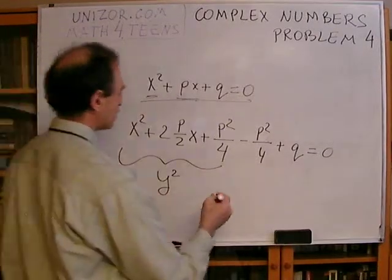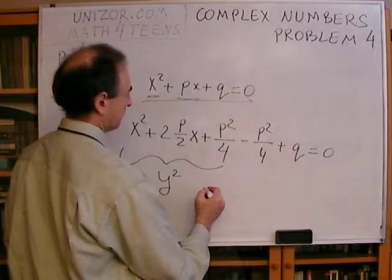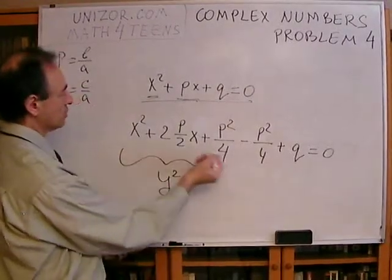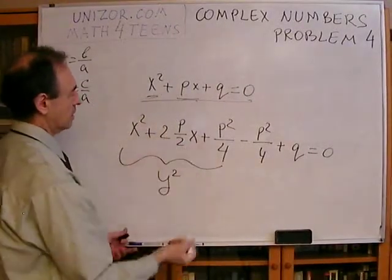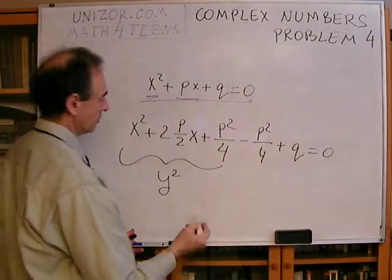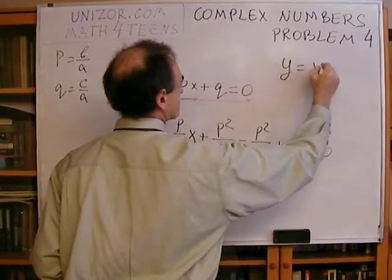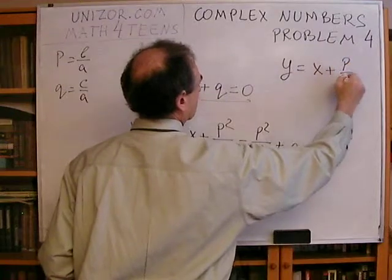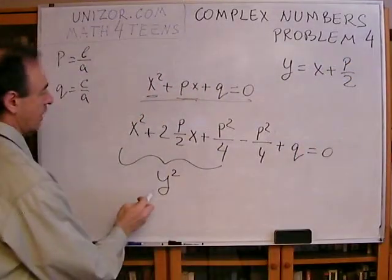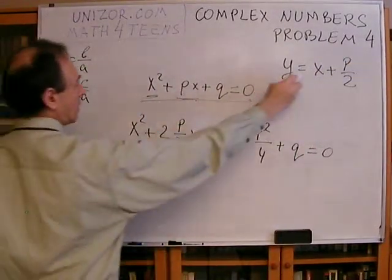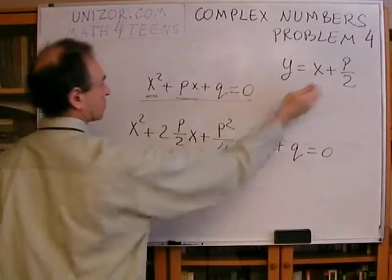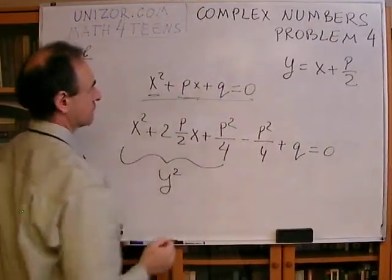So, in this case, the equation is, I can use Y or I can use X plus P divided by 2. So, Y is, in this case, X plus P divided by 2. And that's why Y squared will be X squared plus 2P divided by 2X plus P squared over 4.